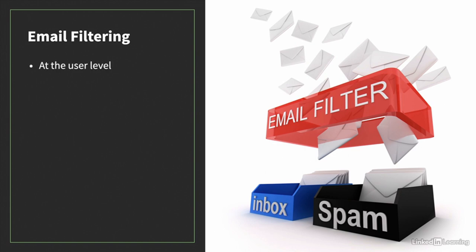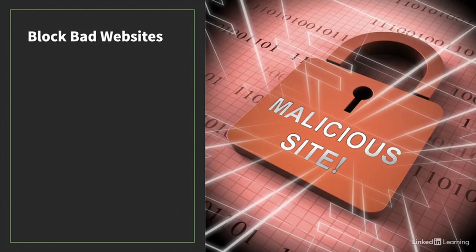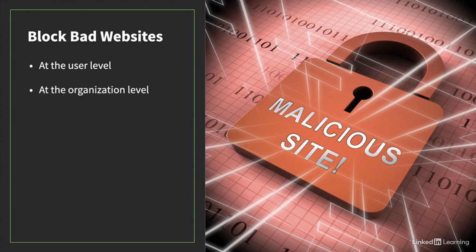Organizations can block suspicious emails at the email server by blacklisting known malicious email servers and even blocking emails from entire countries, domains, or IP address ranges. Many email servers have additional controls designed to identify and block malicious emails. The next way to protect against phishing is to block access to fraudulent and malicious websites. This can be done at the user level by accessing the internet only with web browsers that show a warning if users attempt to go to a fraudulent site. Organizations can also install firewalls or proxy servers that prevent users from accessing known bad websites.